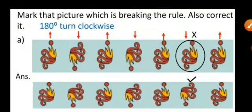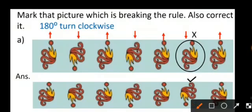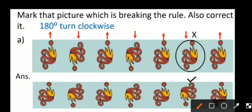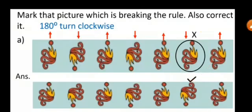Mark the picture which is breaking the rule and correct it. In the first picture, it is in the up direction, then down, then up, down, up, down. This picture is moving by 180 degrees each time, so this shape is wrong. The corrected one is given here.